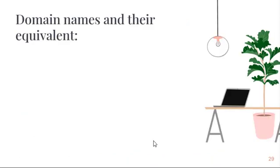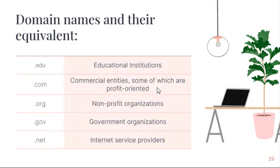Domain names and their equivalents. Here are the most common domain names and their meanings: .edu for educational institutions such as universities and schools; .com for commercial entities — the most common domain name seen on websites; .org for non-profit organizations such as islamic-relief.org or muslimaidusa.org; .gov for government organizations such as deped.gov.ph or doh.gov.ph; .net for internet service providers such as dctech.net.